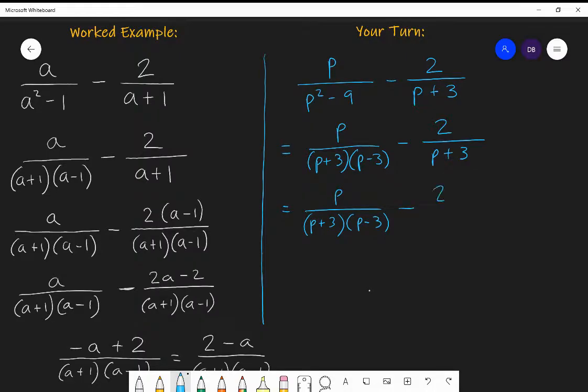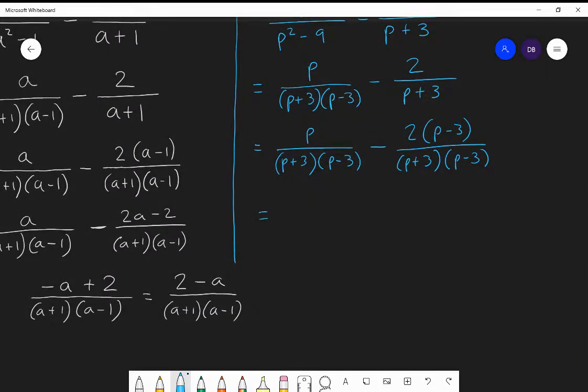Subtract two lots of P minus three over P plus three, P minus three. I've multiplied the top and bottom by P minus three. And then expand the brackets. P over P plus three, P minus three. Subtract two P minus six over P plus three, P minus three.